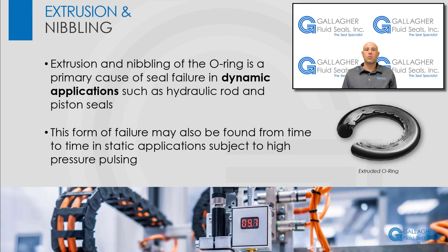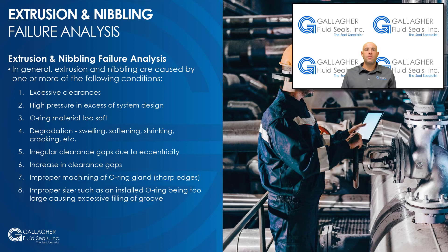Next, we are going to talk about extrusion and nibbling. Extrusion and nibbling of the O-ring is a primary cause of seal failure in dynamic applications such as hydraulic rod and piston seals. This form of failure may also be found in static applications subject to high pressure pulsing, which causes the clearance gap of the mating flanges to open and close, trapping the O-ring between the mating surfaces. Now, let's dive into extrusion and nibbling failure analysis.